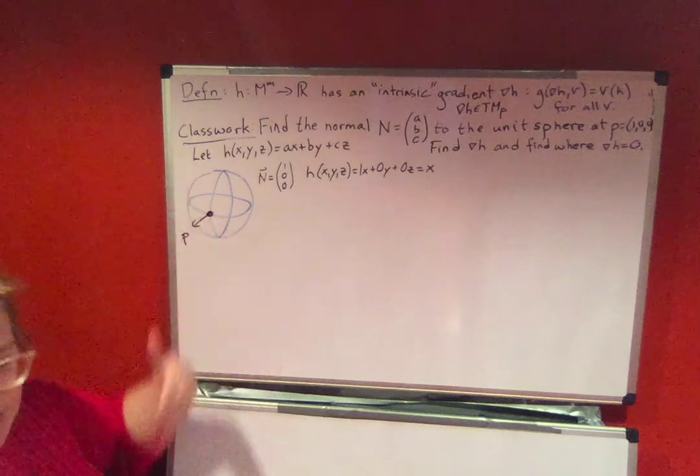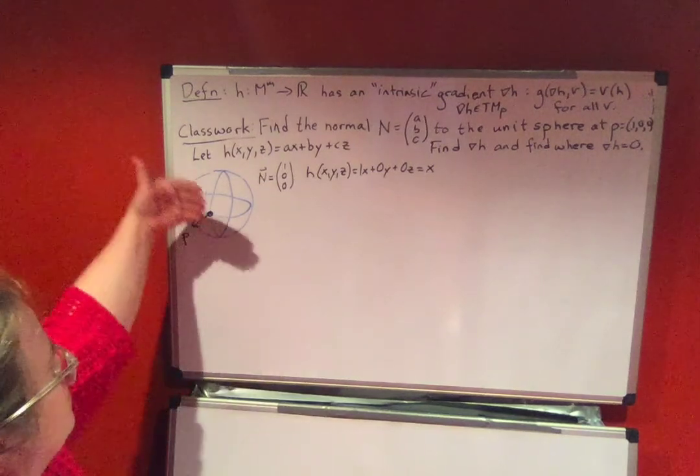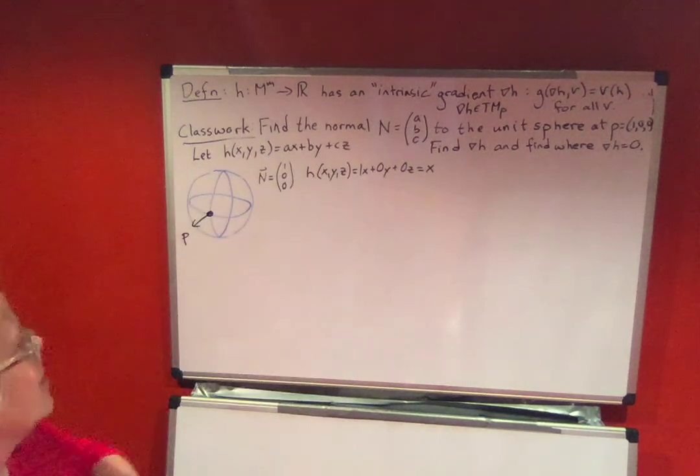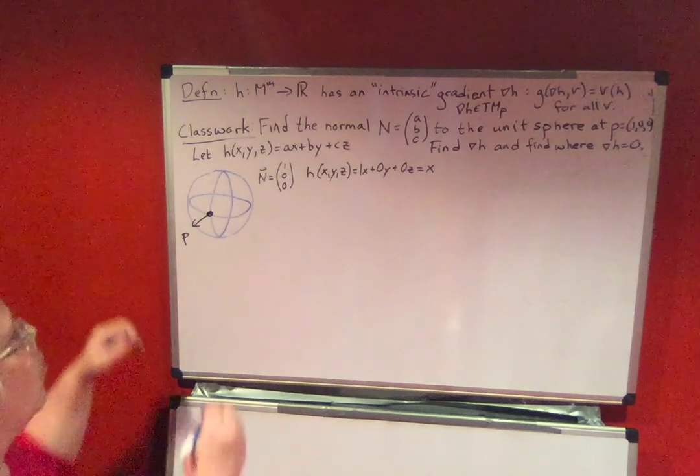So this is giving the tangent plane. So this formula h of (x,y,z) is actually going to equal 1 at P.